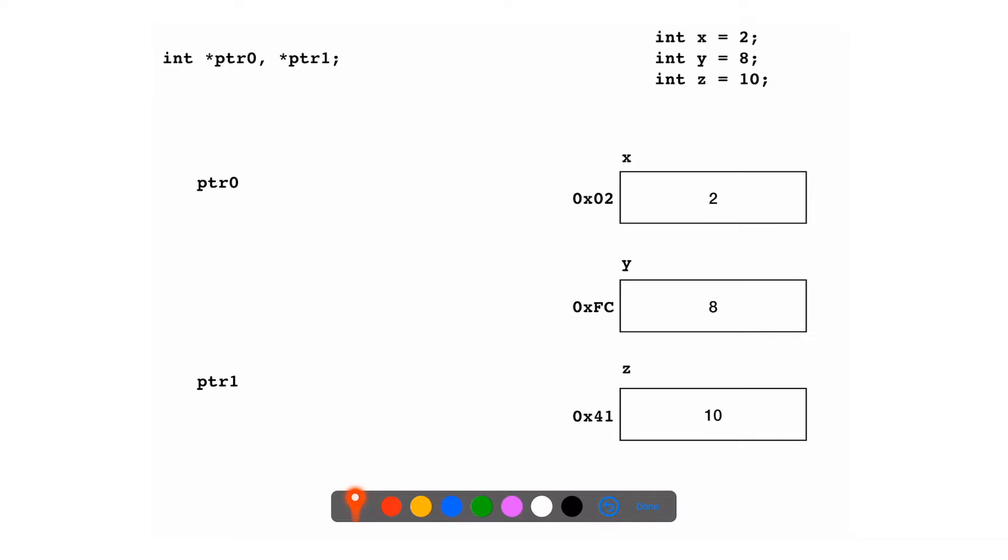On the other side, what you see me doing is I'm declaring new pointer variables. The way you declare a pointer is by using this asterisk in front of the variable name. So I'm defining two pointers: pointer 0 and pointer 1. Pointer 0 now points to an integer type and pointer 1 points to an integer type. At this point they're not pointing to anything. I just declared variables of type pointer.